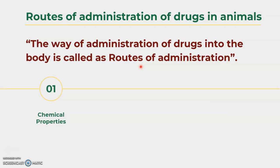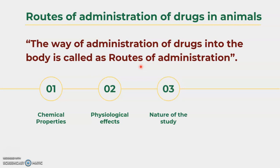What are the different significant factors for routes of administration? Number one is the chemical properties of the drug, which should be considered before choosing the route. Second is the physiological effect after administration of the drug into the body. Third is the nature of the study — which experiment we are conducting and which animal we are using. According to these factors, we change the route and dose quantity. For intravenous route, the dose quantity is smaller compared to the oral route.